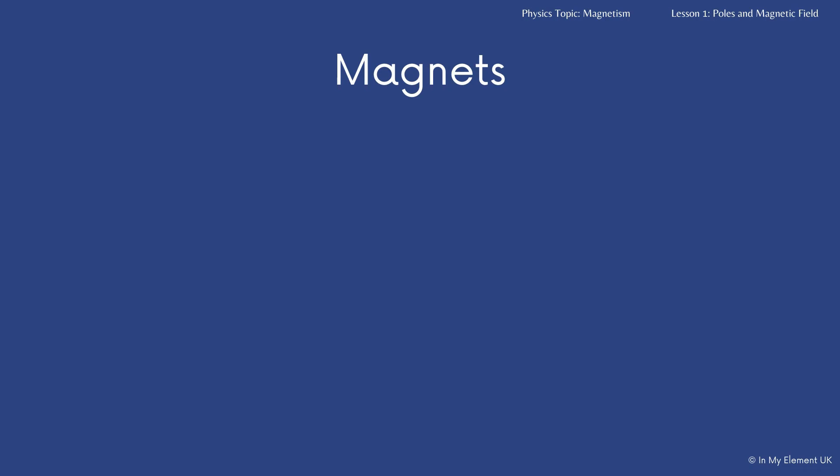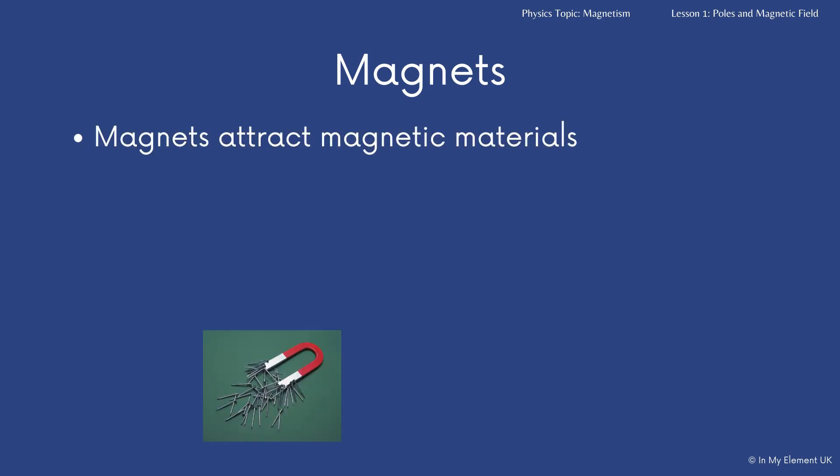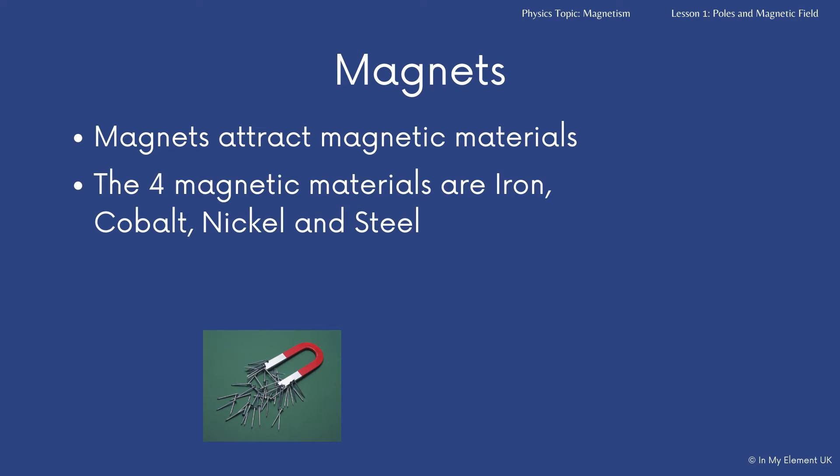What you need to know is that magnets attract magnetic materials. You also need to know the four magnetic materials: iron, cobalt, nickel, and steel. Remember, iron, cobalt, and nickel are all elements — metals found in the periodic table. Steel is not; it is an alloy. It is still magnetic, though.